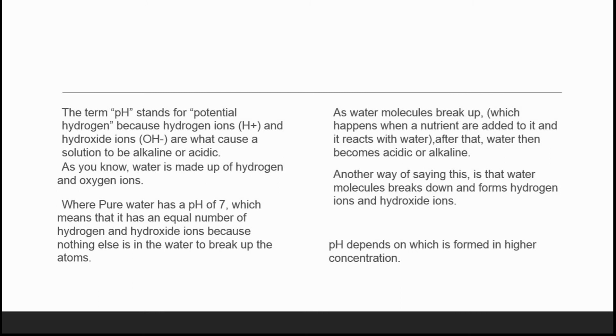Water is made up of hydrogen and oxygen ions. Pure water has a pH of 7, which means it has an equal number of hydrogen and hydroxide ions because nothing else is in the water to break up the atoms.